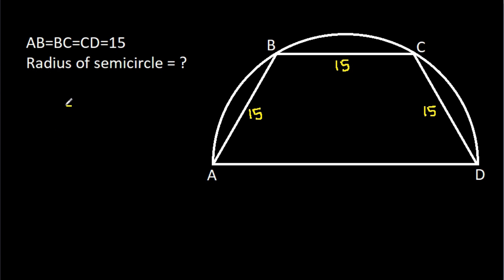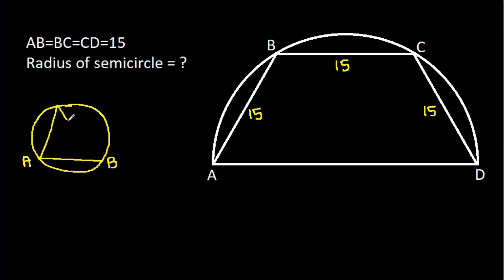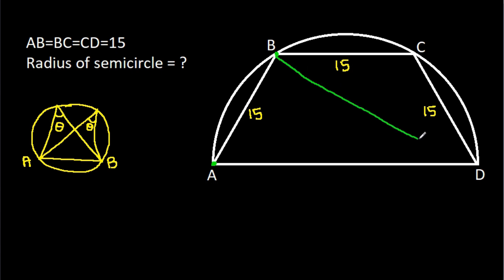In any circle, from any chord AB, if we make two angles on the circle, then they will be equal. So from chord AB, angle ADB will be equal to angle ACB.